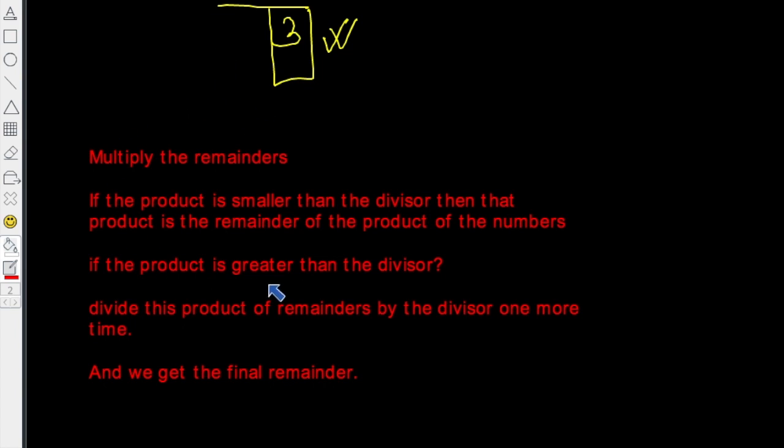How can we show that this particular rule we are guessing to be true is actually true? How can we concretely prove this result? We will use algebra for this. Let's say our divisor is D.